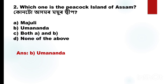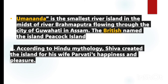Umananda is the smallest river island in the midst of river Brahmaputra, flowing through the city of Guwahati in Assam. The British named the island Peacock Island.